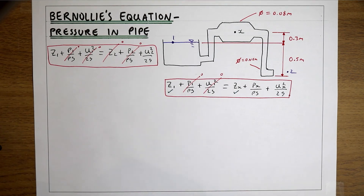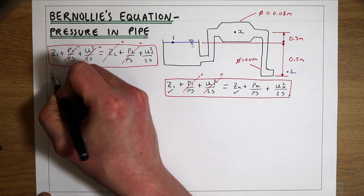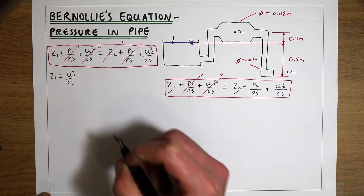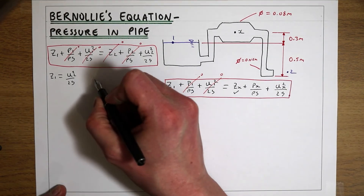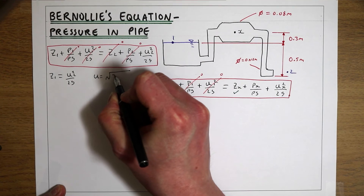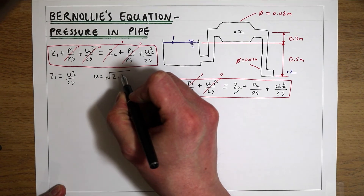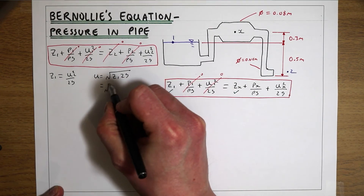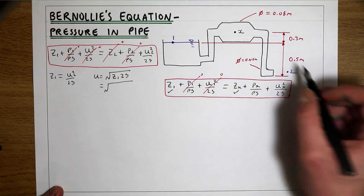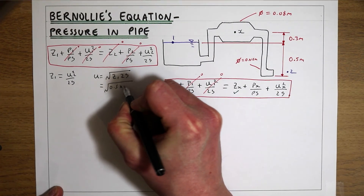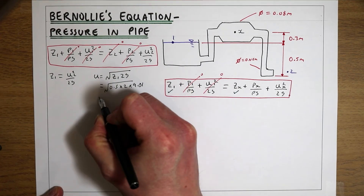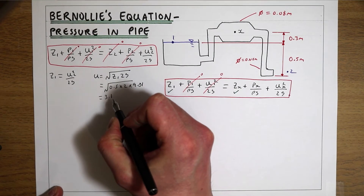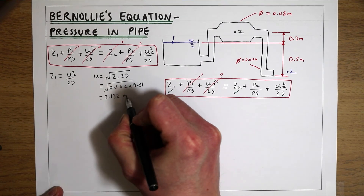This gives us Z1 = U2²/2g. To work out the velocity at point two: U2 = √(Z1 × 2g) = √(0.5 × 2 × 9.81), which gives us a velocity at that point of 3.132 metres per second.